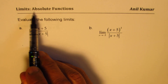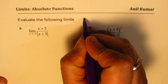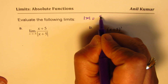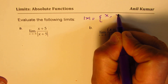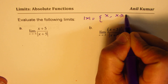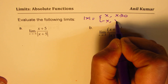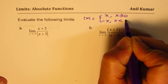As you know, absolute functions are actually piecewise functions, which are normally written as: absolute value of x equals x when x is greater than or equal to 0, and negative x when x is less than 0.